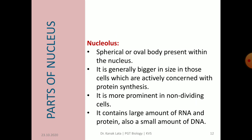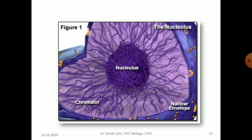The last part of the nucleus is the nucleolus. It is a spherical or oval body present within the nucleus. It is generally bigger in size in those cells that are actively concerned with protein synthesis and is more prominent in non-dividing cells. It contains a large amount of RNA and protein, and also a small amount of DNA. You may observe the nucleolus present inside the nucleus in the figure.